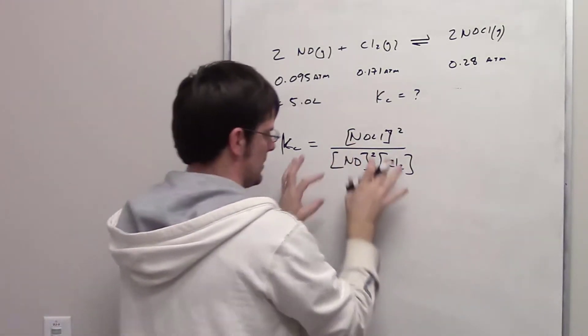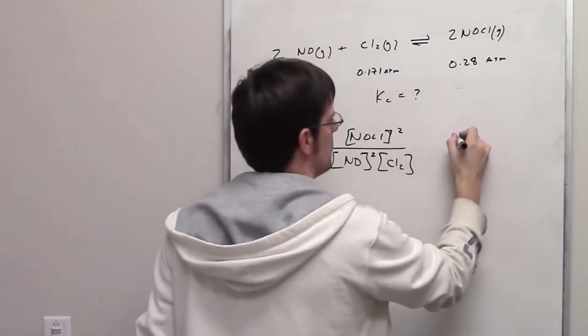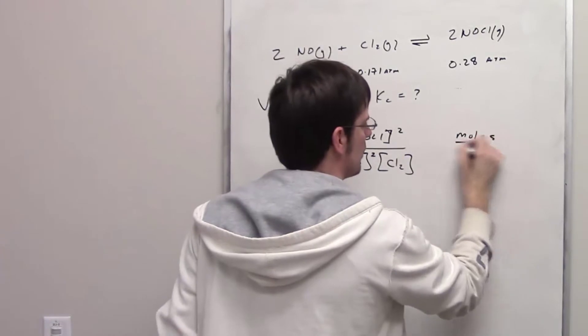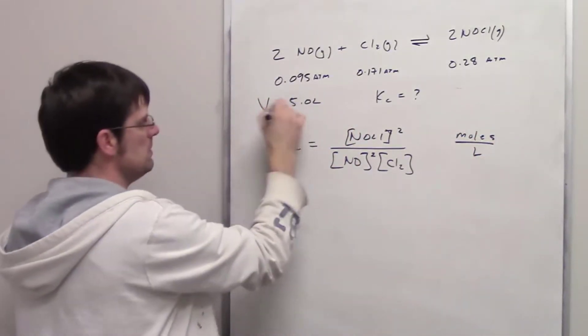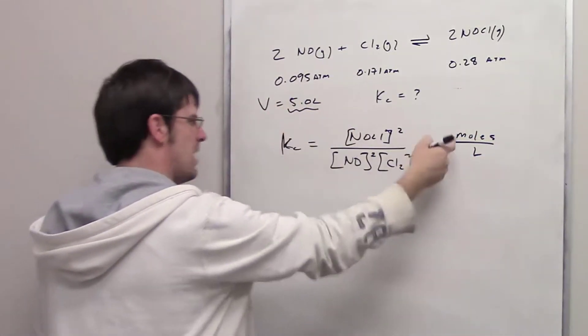Well, of course, concentration as expressed here is going to be equal to moles per liter. We have the volume, 5 liters, but how do we get the moles?